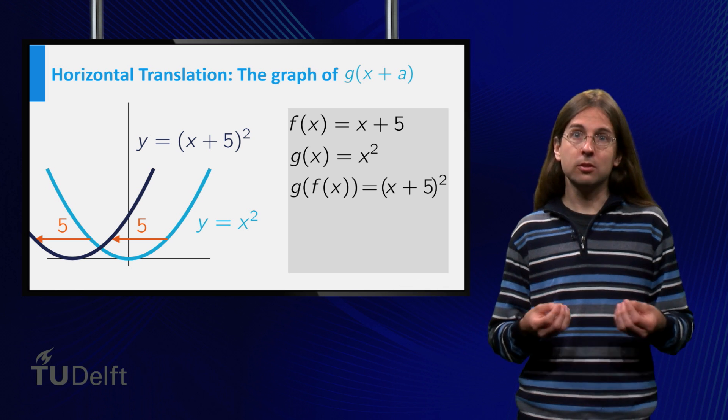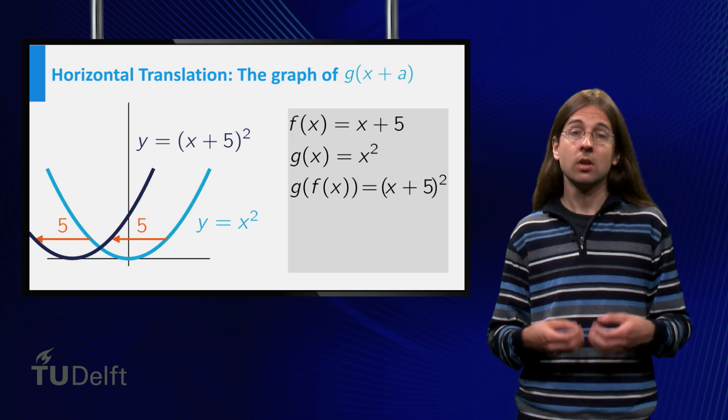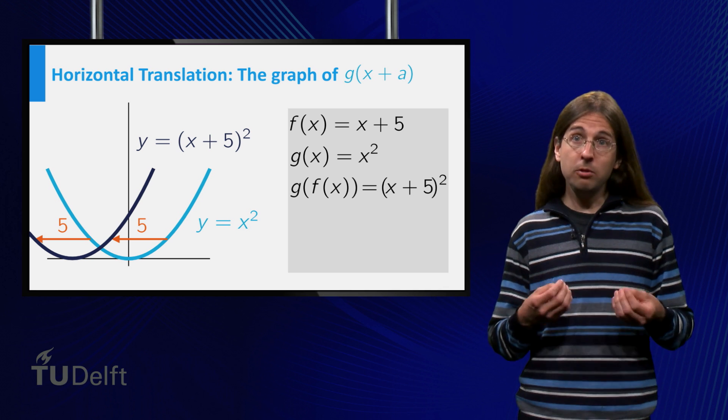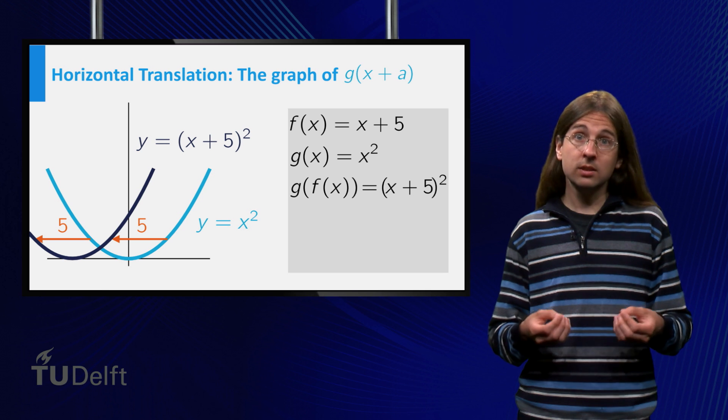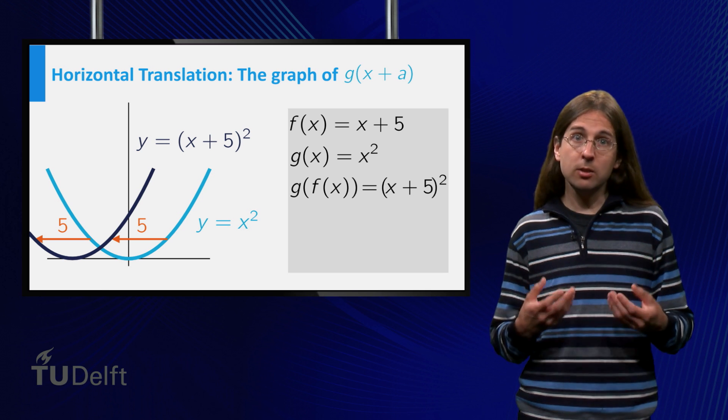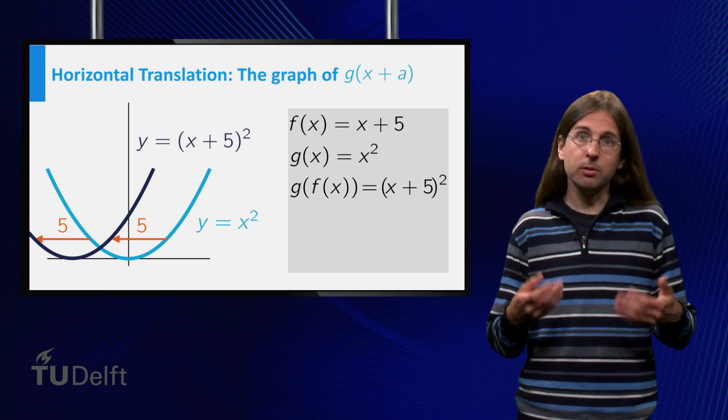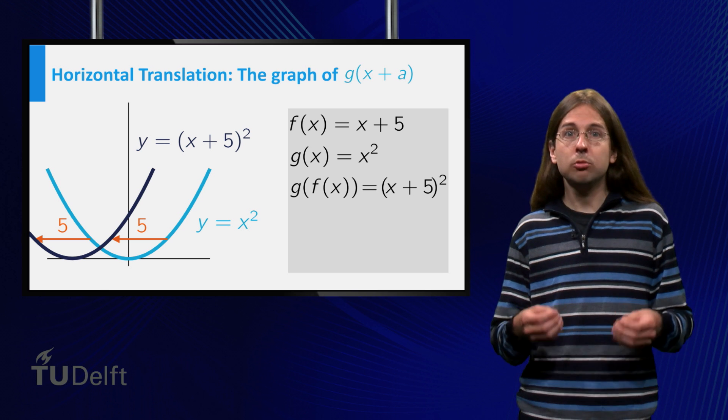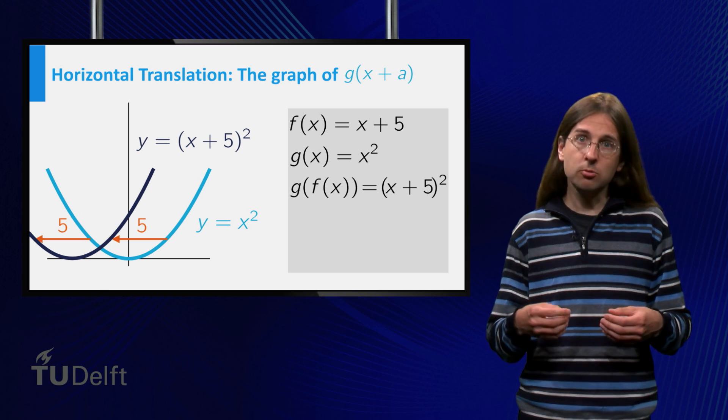This might seem counterintuitive at first. However, if we consider x plus 5 squared, then the value at x equals minus 5 of x plus 5 squared is equal to the value at x equals 0 of x squared.